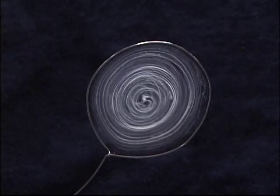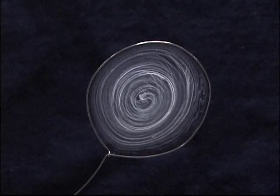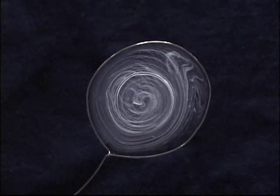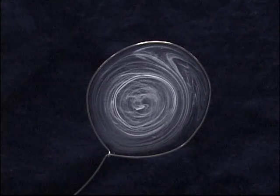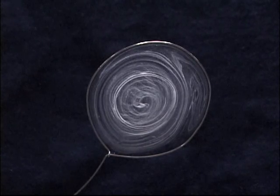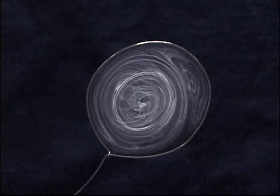You can see that the pattern rotates in one direction for a while, it'll stop and start to rotate in the opposite direction. This is due to the residual acceleration forces on space station. You can also see that diffusion is slowly making the streak lines diffuse with time.